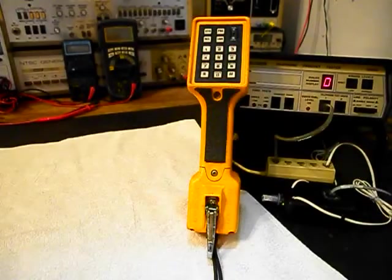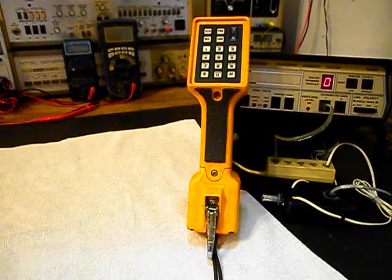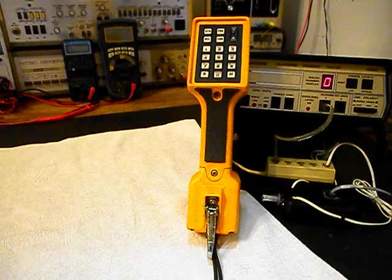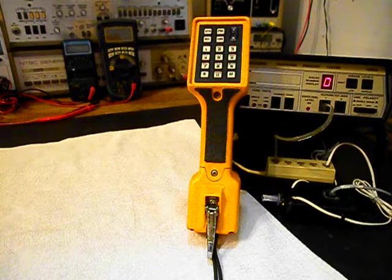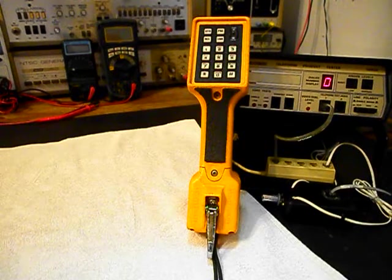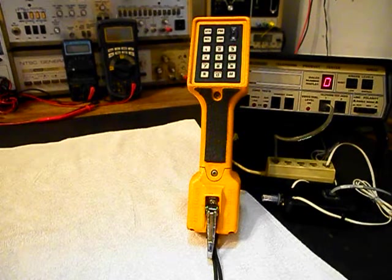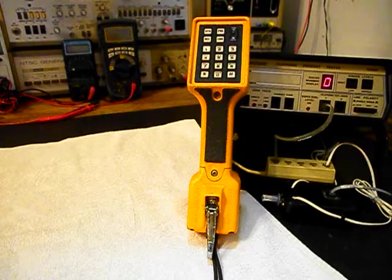Now that we know that this really cool TS-22 lineman's butt set has been converted with the primary battery and a socket, we can return this unit back to Rod. And he can enjoy this lineman's butt set once again. I'm sure he's going to get plenty of use out of it in the field.